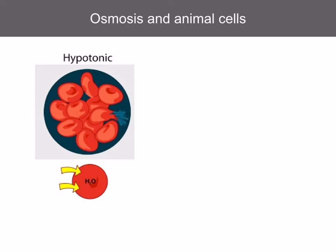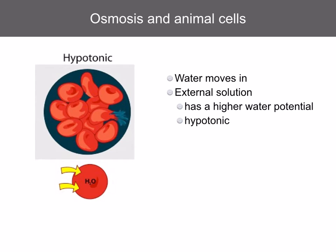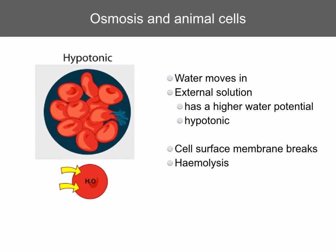If a red blood cell is placed in pure water, which is hypotonic, water will move into the cell by osmosis, because the external solution has a higher water potential. Now the cell surface membrane is very thin, and although it's flexible, it can't stretch to a great extent. So the cell surface membrane will eventually break as water moves in, and the contents of the cell will be leaked out. This is known as hemolysis.